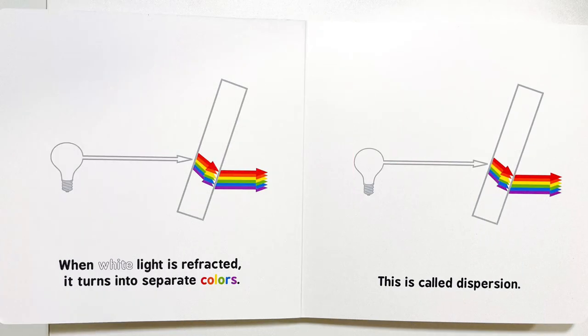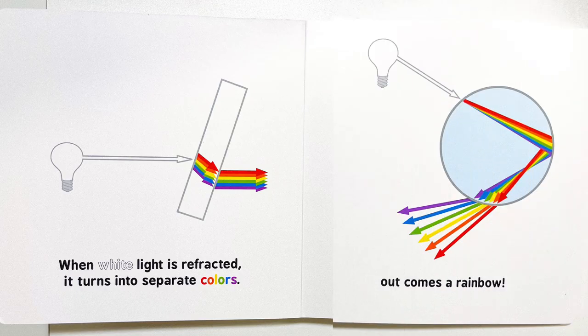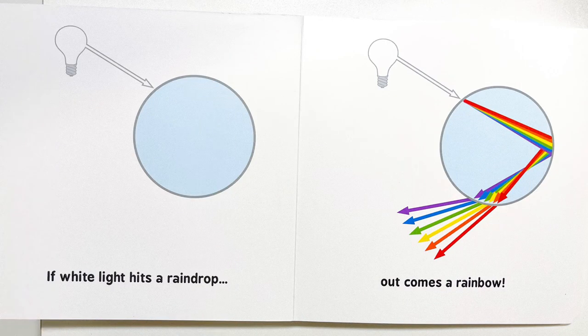When white light is refracted, it turns into separate colors. This is called dispersion. If white light hits a raindrop,